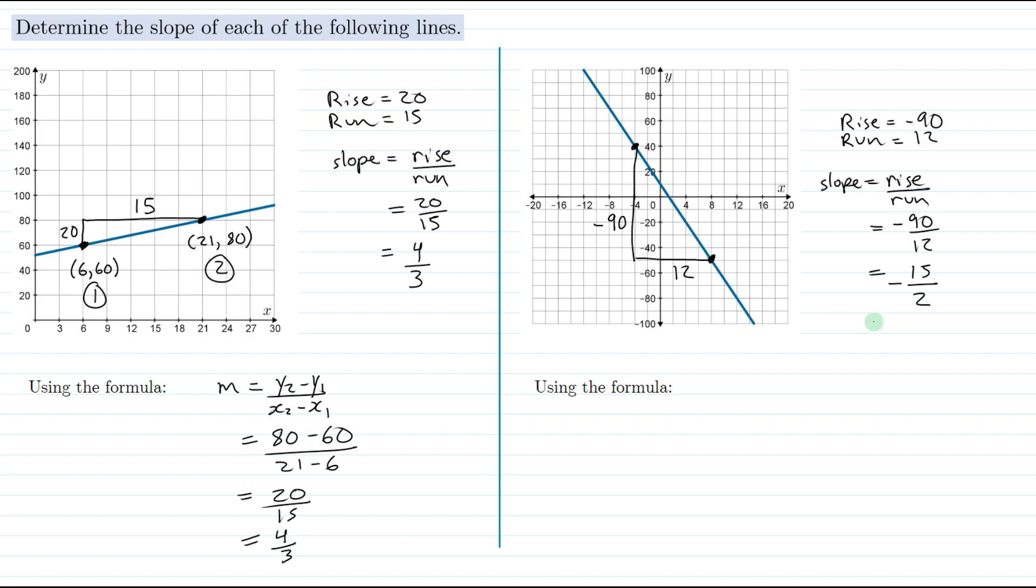I should mention too that you could write this as a decimal. 15 divided by 2 is 7.5, so you could say that this equals 7.5, but don't forget to write that that is negative. It's an option - it's good either way as a fraction or a decimal.